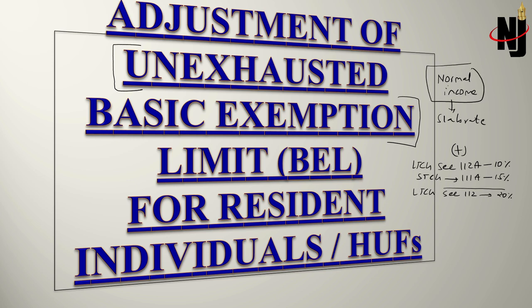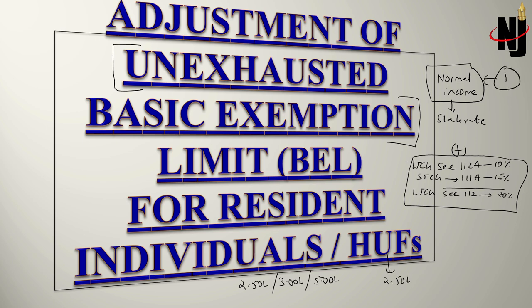If the assessee has normal income taxable at slab rate along with any of these three special incomes, the basic exemption limit — which could be 2.5 lakh for individuals, 3 lakh for senior citizens, or 5 lakh for very senior citizens, and 2.5 lakh for HUF — must first be adjusted against normal income. If it remains unutilized, the remaining basic exemption limit is to be applied against these three special incomes.